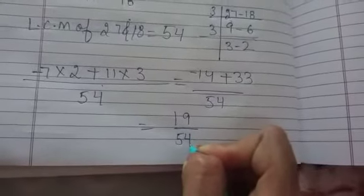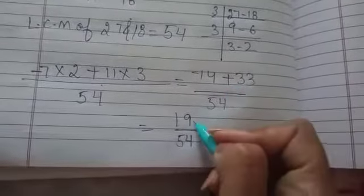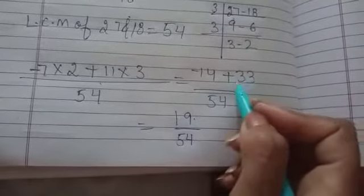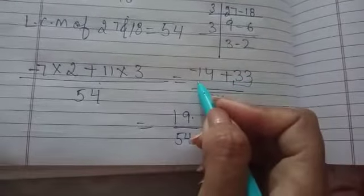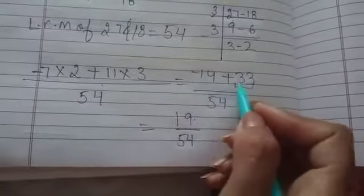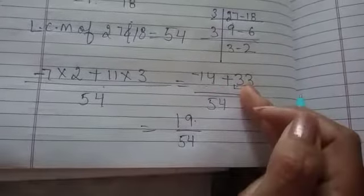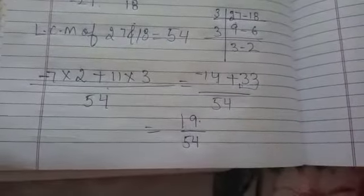Minus 14 plus 33 over 54. You will get 19 over 54. Why 19 plus 19 I have written? Because plus 33 is the bigger number. Minus 14 is the smaller number. When they will fight, this number will win. 19 over 54.